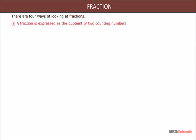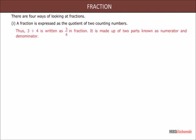One: a fraction is expressed as the quotient of two counting numbers. Thus, 3 divided by 4 is written as 3 upon 4 in fraction. It is made up of two parts known as numerator and denominator.